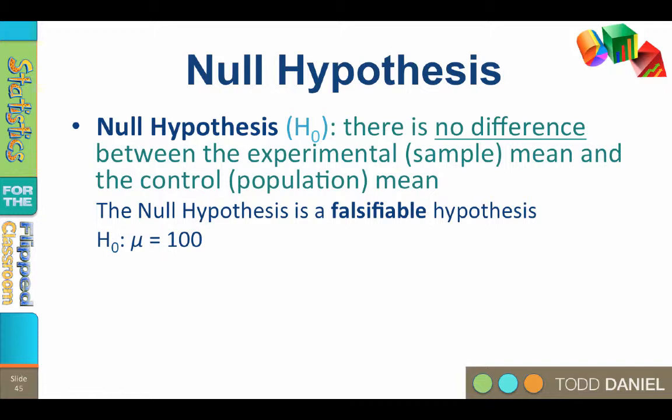So if the test mean was 95, then the true test mean was 100 minus five points of error. The sample mean poorly represents the control or population mean, but functionally they are the same.